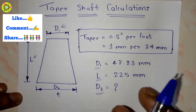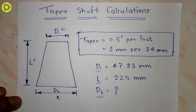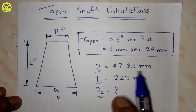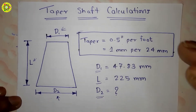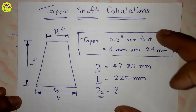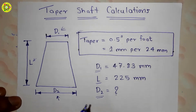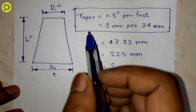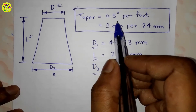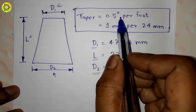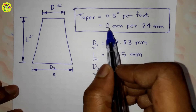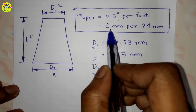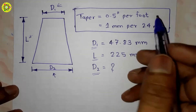We have to find d2. The method I am going to use can be applied to calculate any missing dimension, as long as the remaining dimensions are known. Our given condition is taper = 0.5 inches per foot, which is equal to 1 mm per 24 mm.